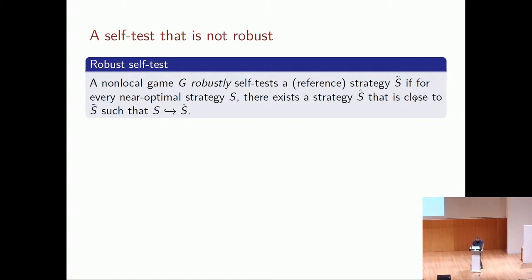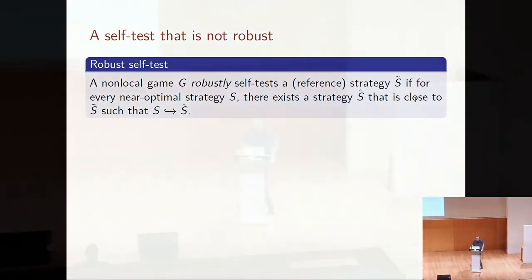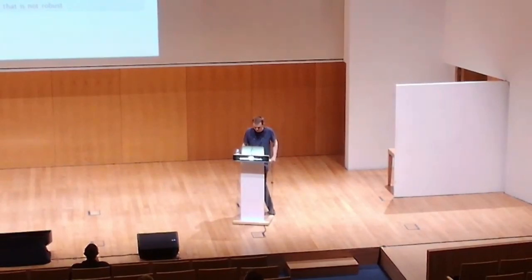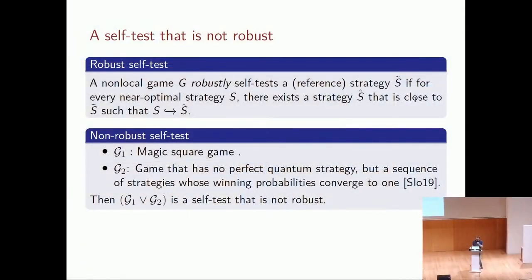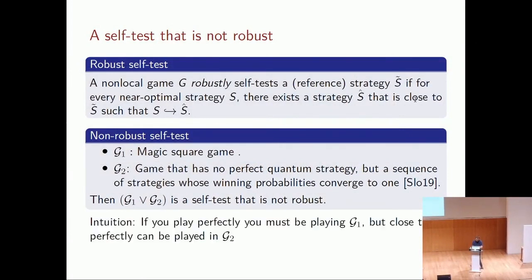We can also construct a non-robust self-test using g1 as the magic square game and g2 as a game with no perfect quantum strategy, but with a sequence of strategies whose winning probabilities converge to one. This cannot be a self-test because, while you can be perfectly optimal by playing g1, you can get arbitrarily close to optimal by playing g2. The strategies for g1 and g2 are very different, yet this remains a robust self-test from playing g1.